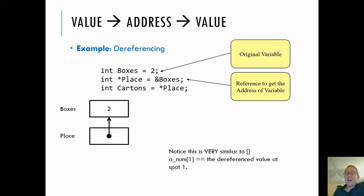What if I can also say cartons is equal to dereference place. This is go to, what is place pointed to? It's pointed to boxes. Go to boxes, get the value, set cartons to be equal to that value. So cartons in this case would be the value two. It's going to go to where it's pointing and get the value. So cartons will be equal to two at the end.